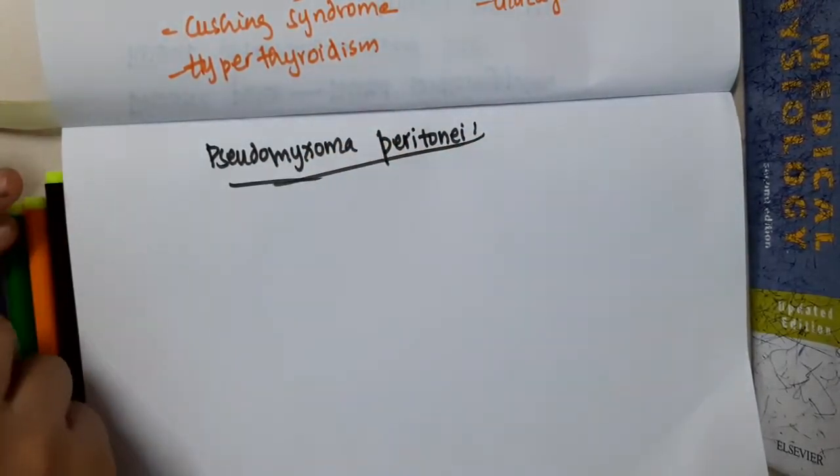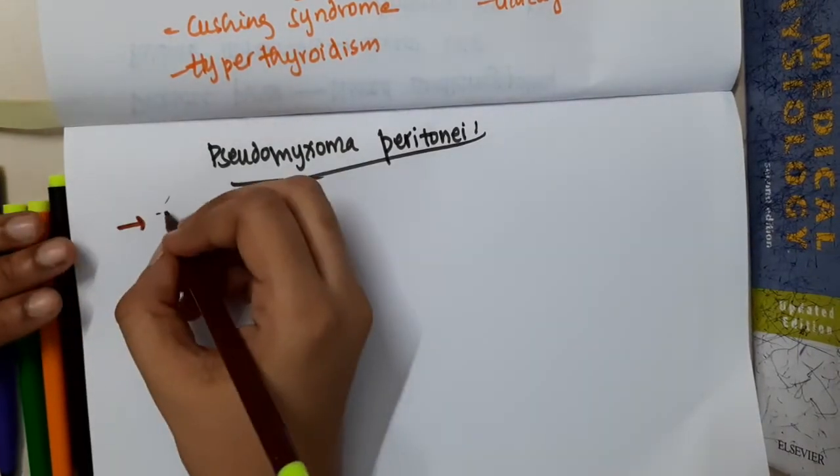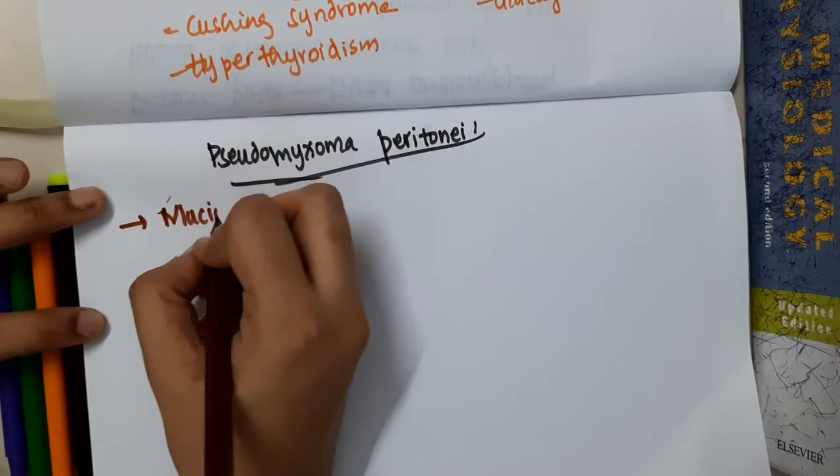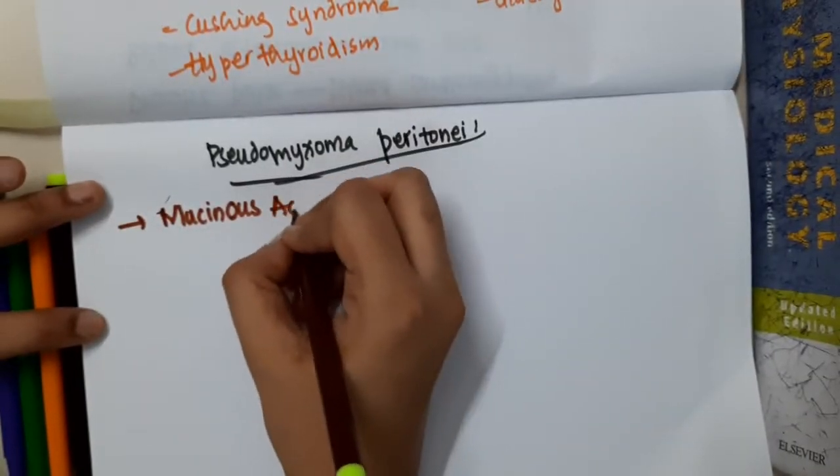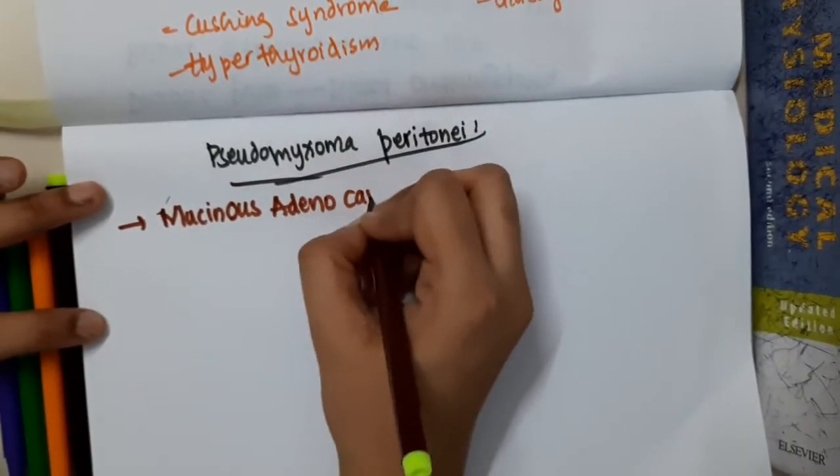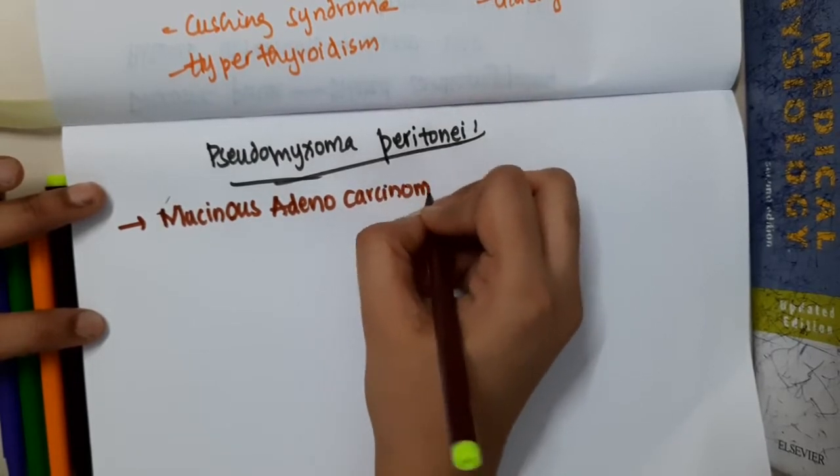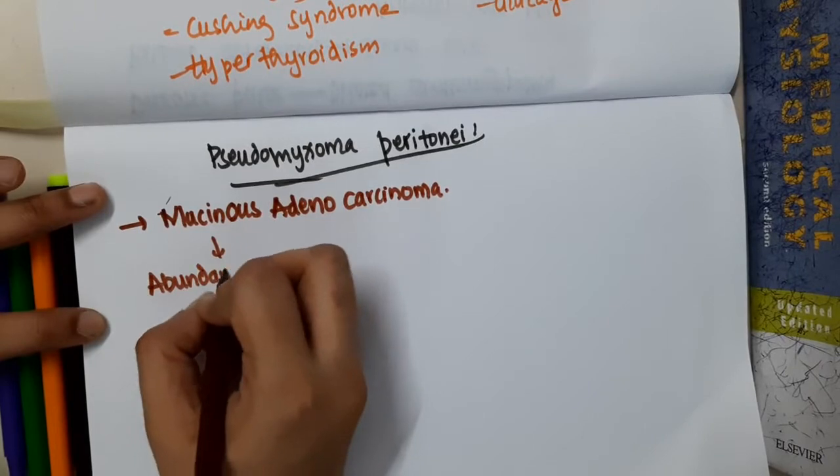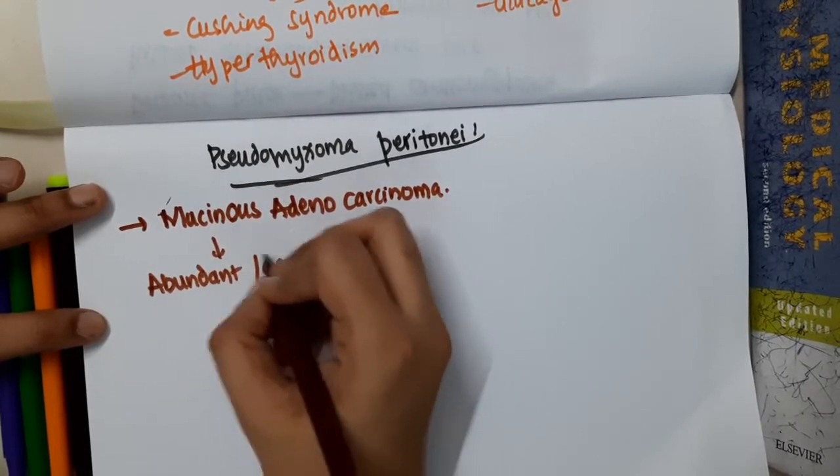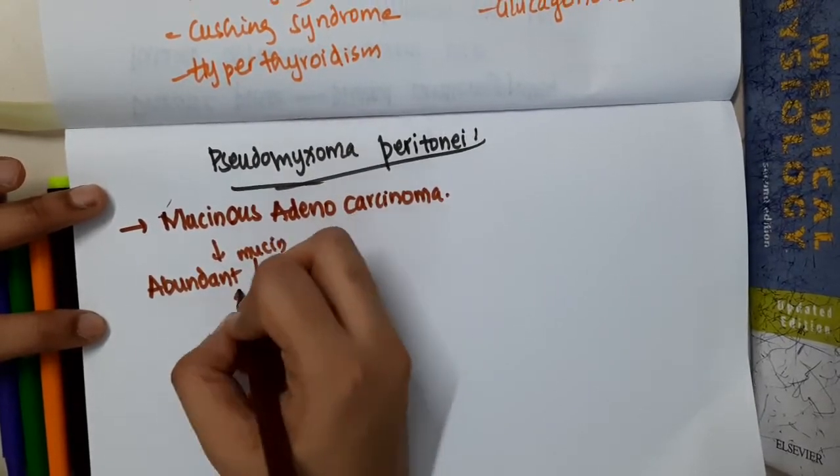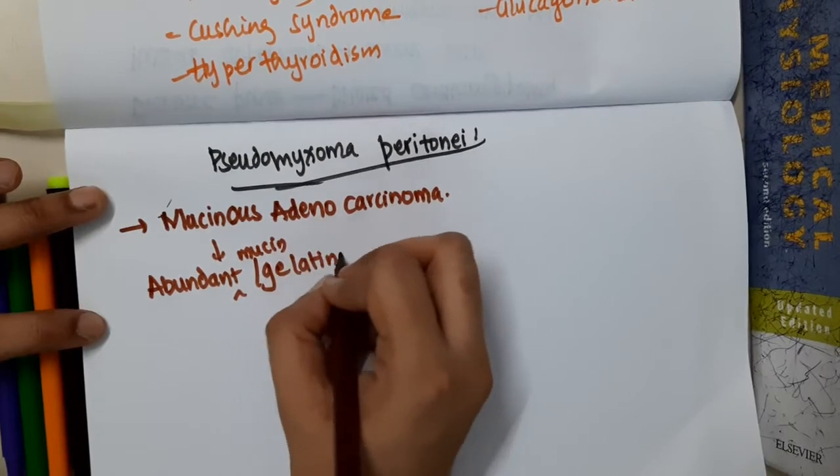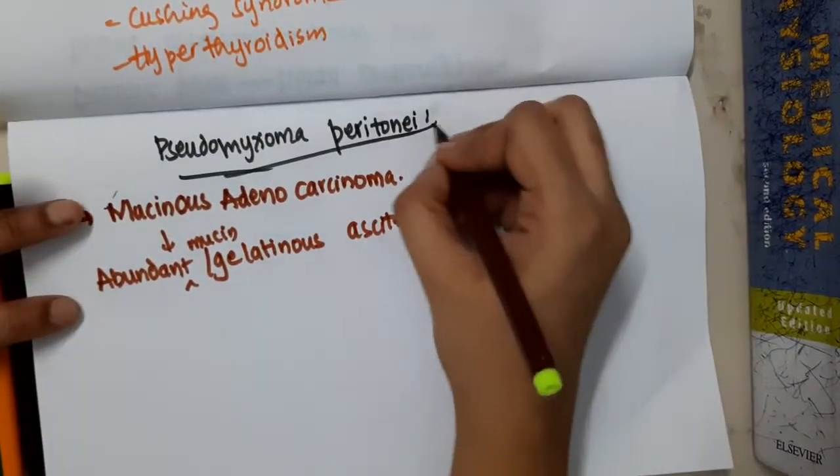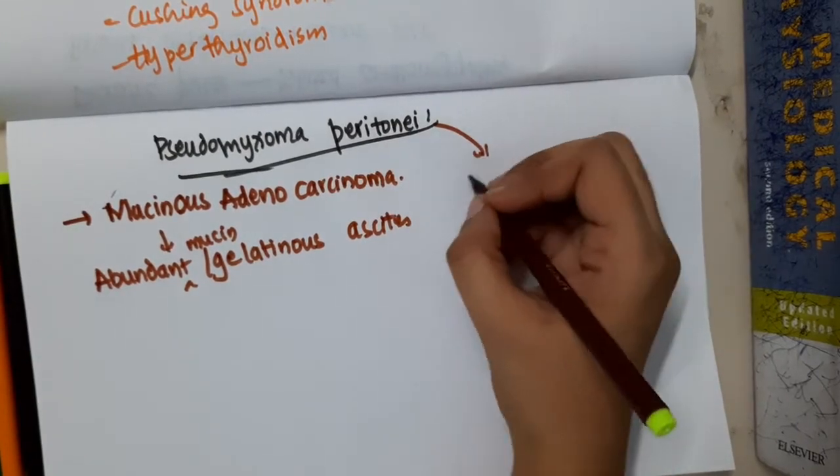Pseudomyxoma peritonei is a condition caused by mucinous adenocarcinoma. Mucinous adenocarcinoma produces abundant mucin or gelatinous ascites.